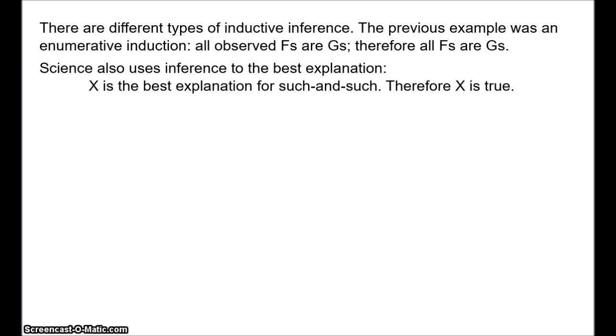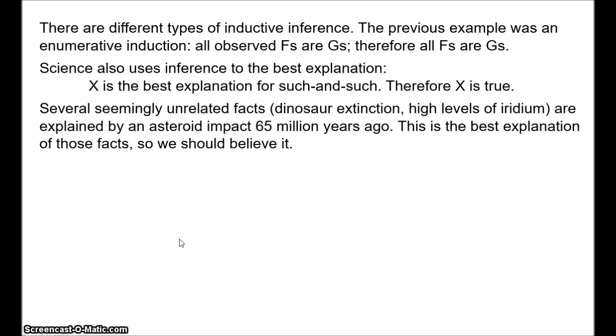We might wonder why they went extinct. We also find that there are high levels of the element known as iridium in layers of the crust that are dated to about 65 million years ago. Now, we know that asteroid impact can cause both extinction events and high levels of iridium, since asteroids contain much more iridium than the Earth's crust. So it looks like we have an explanation of these seemingly unrelated facts. 65 million years ago, an asteroid struck the Earth, and that caused the dinosaur extinction, and it caused the high levels of iridium to be deposited into the crust.